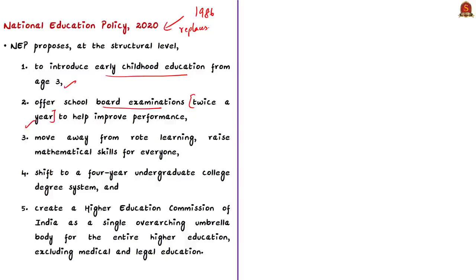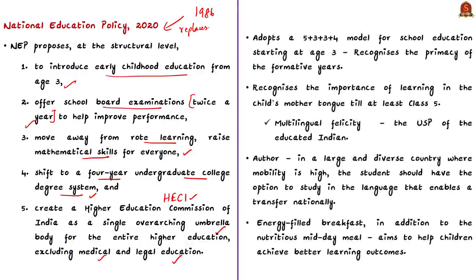NEP also provides for a four-year undergraduate degree system and a single regulator called the Higher Education Commission of India with separate verticals for different functions. As per the 2020 policy, school education starts at age three with preschooling. The policy recognizes the primacy of formative years from ages three to eight in shaping a child's future, and acknowledges that ages three to six are crucial for mental development. It also recognizes the importance of learning in a child's mother tongue until at least Class 5.